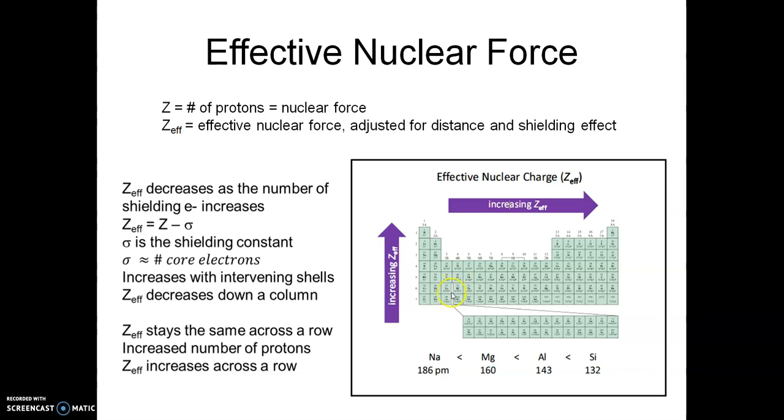Now, the nuclear force itself is essentially Z, the number of protons, the atomic number. Remember Z from back in chapter 2. So that's the nuclear force, but each electron is going to feel less than that force because they're different distances from the nucleus and there's different shielding effects on each electron. So Z-effective is the effective nuclear force, the force that the electron actually feels, not the true force that the nucleus is putting out because of shielding and all that stuff.